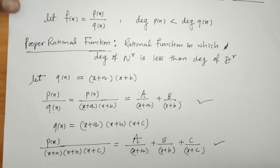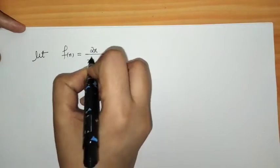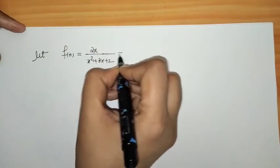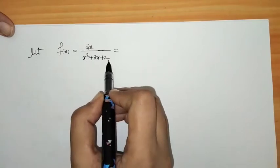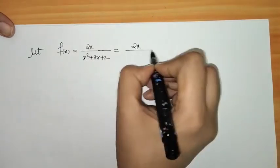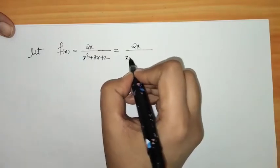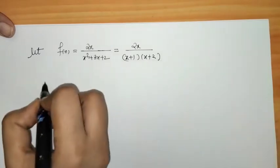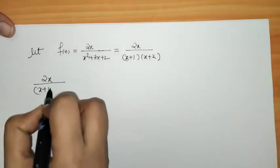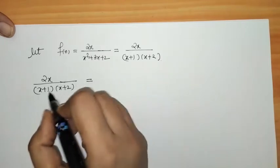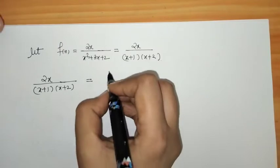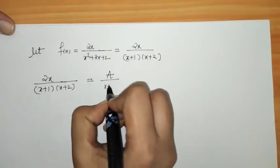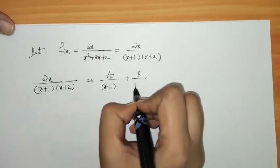Let's consider one example. Let f(x) = 2x/(x²-3x+2). We have to resolve this in partial fractions. This is a proper rational function since the degree of the numerator is less than the degree of the denominator. First, we factorize the denominator: x²-3x+2 = (x+1)(x+2). These are two non-repeated linear factors, so we write this as A/(x+1) + B/(x+2).